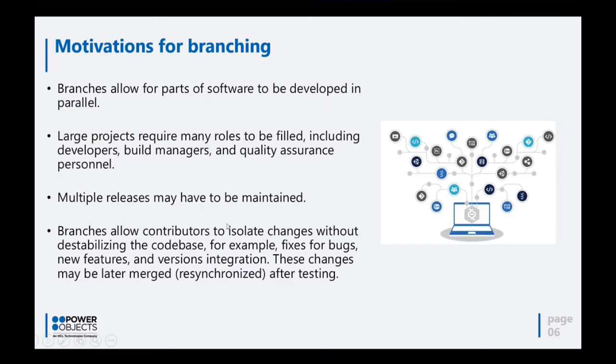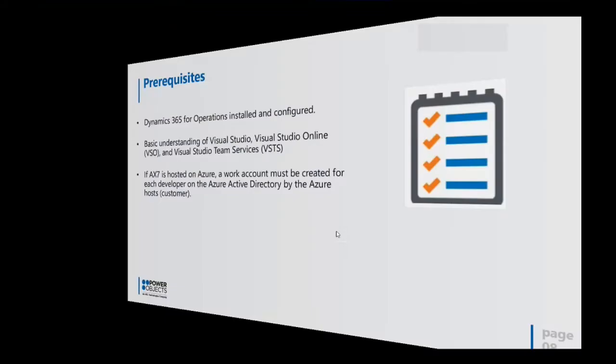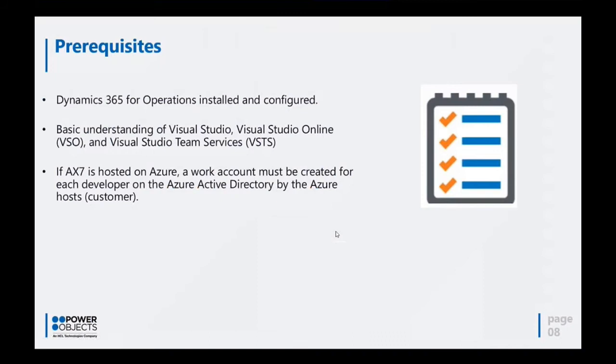In order to utilize branching, we need to create a VSTS account and go through the steps. There are some prerequisites: you need Dynamics 365 F&O installed and configured — you will do that through LCS. Once this is done, you will be able to start preparing for your VSTS account setup. You also need some basic understanding of Visual Studio, as everything is managed through Visual Studio. The management of merging different changes from branch to branch needs to be done from Visual Studio.